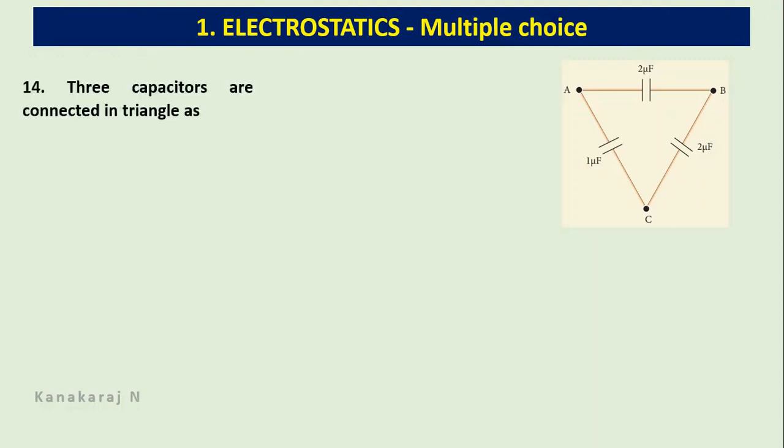Three capacitors are connected in triangle as shown in the figure. The equivalent capacitance between the point A and C - we are asked to find between A and C, thereby two capacitors each will be forming a series combination. The effective capacitance of this series combination will form a parallel combination with one microfarad.